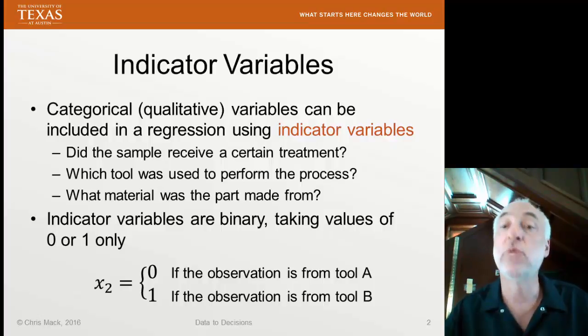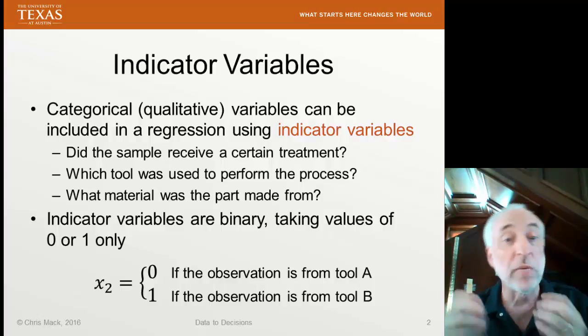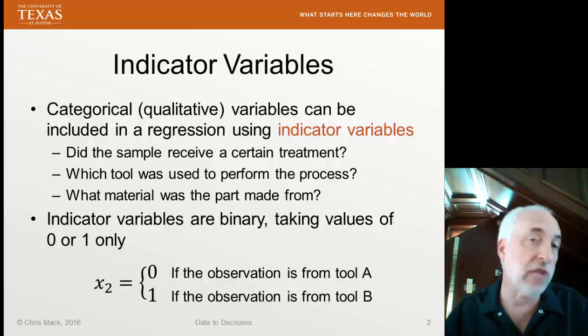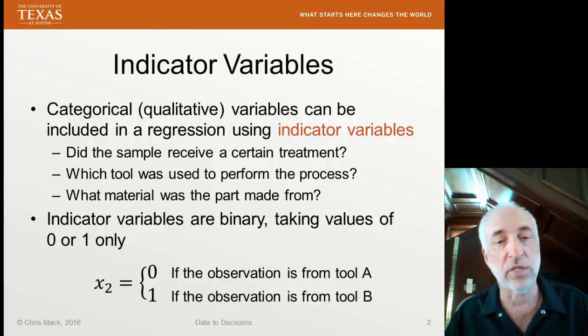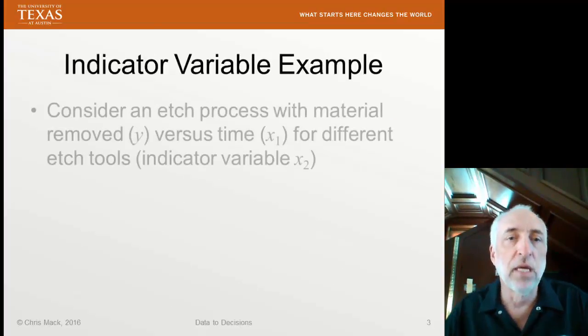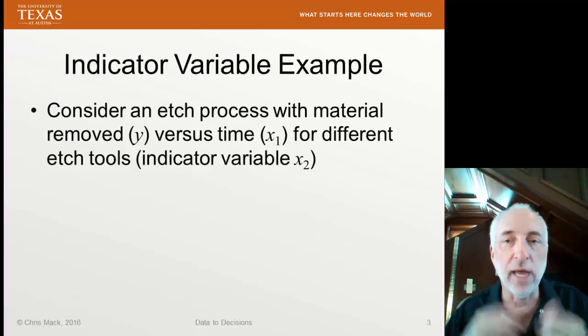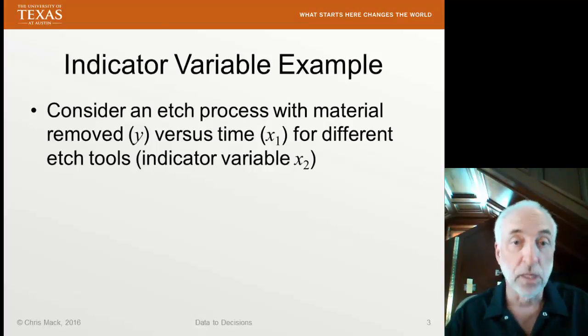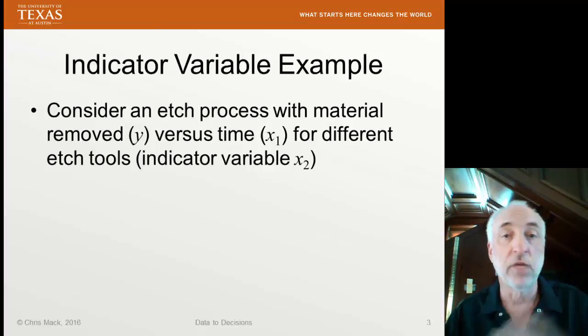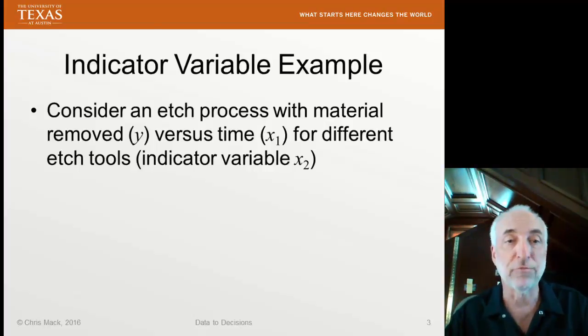Any coefficient of X2 other than 0 would say that the tool is significant, whether it's tool A or tool B makes a difference in our response. The coefficient would also give you an indication of the magnitude of the difference of using tool A versus tool B. Here's an example. I have an etch process. The thickness of the material remaining is my response variable Y. The thickness varies with time. That's what etching does. But I have two different etch tools, and I will use an indicator variable X2 to represent the etch tools.